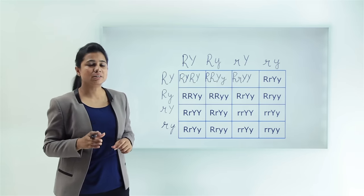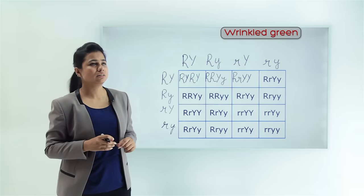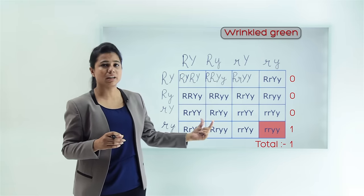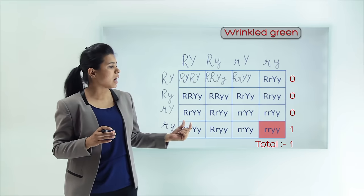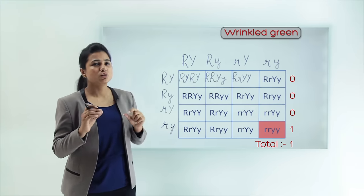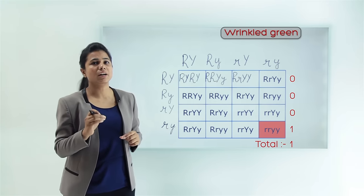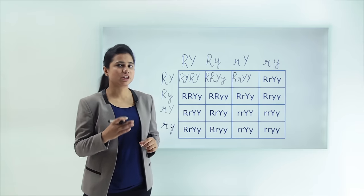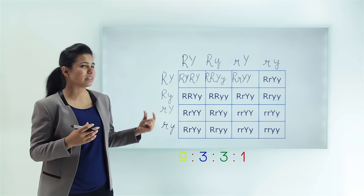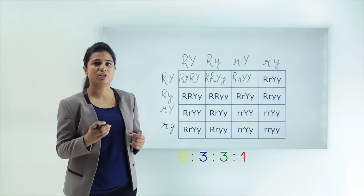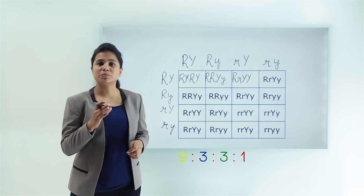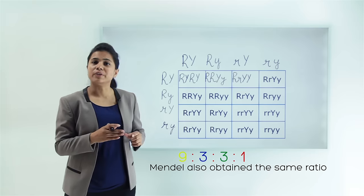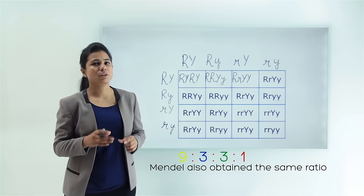Finally, for the wrinkled and green seeds, the genotype must have both small r and both small y (rryy). Only in the fourth row, in the last cell, do we have this combination. So there is only one wrinkled and green seed. The ratio of progenies obtained is 9:3:3:1, which matches exactly the observation Mendel obtained.